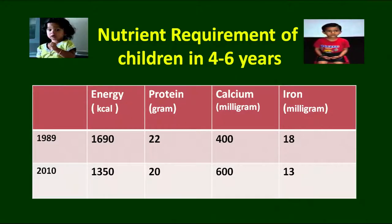We are also talking about children between 4 to 6 years. You can see how much energy they require and how much protein they require. For calcium, initially the requirement was only 400 milligrams but the recent requirement is 600 milligrams. There are various scientific reasons and studies that have proved these changes. So, energy requirement for this age group is 1350 calories, 20 grams of protein, 600 milligrams of calcium, and 13 milligrams of iron.